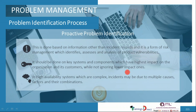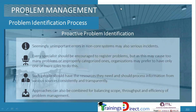Sometimes incidents can happen due to small errors in a minor system. In high-visibility complex systems, incidents may be due to multiple factors and their combinations — multiple factors happening in different areas may align all at once to create the ideal situation for a large incident.